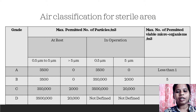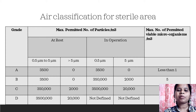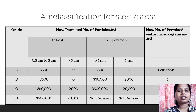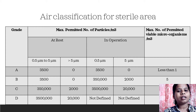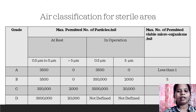This particular table explains the standards of the maximum number of particles permitted in different grades or different areas. As we discussed earlier, depending upon the operations to be performed in a particular area, the areas are defined as Grade A, Grade B, Grade C, and Grade D.